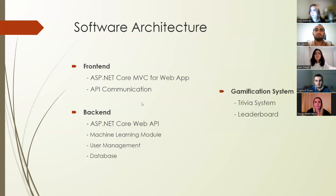Next, software architecture. Let's talk about the structure. We have two main parts, the front-end and the back-end. The front-end is what users see and interact with. We built this using ASP.NET Core MVC, making sure it's easy to use. The back-end is where all the data processing happens. It's built with ASP.NET Core Web API and includes our machine learning module for movie recommendations, user management and our database. We also have a fun gamification system with trivia games and a leaderboard to keep users engaged.